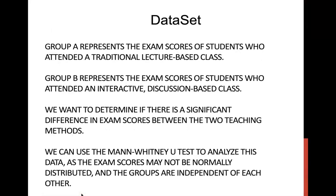Let's take a look at our data sets. We have two groups. We have group A representing the exam scores of students who attend a traditional lecture-based class, and group B representing the test scores of students who attend an interactive discussion-based class. We want to determine if there is a significant difference in the exam scores between the two teaching methods. We can use a Mann-Whitney U test to analyze the data as the exam scores may not be normally distributed, and the groups are independent of each other.